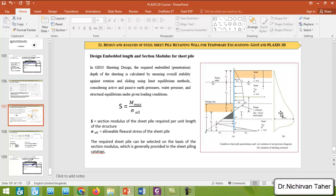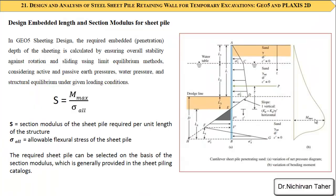So as I said before, we can easily calculate the section modulus which is required to be stable against this maximum bending moment acting on the sheet pile wall.